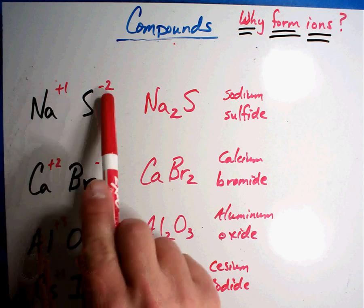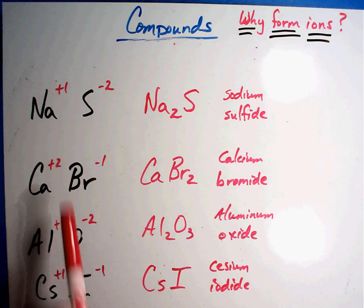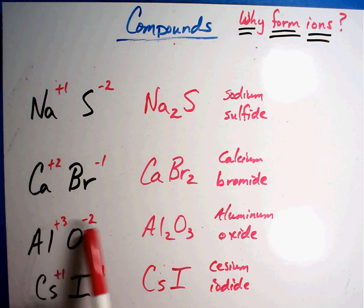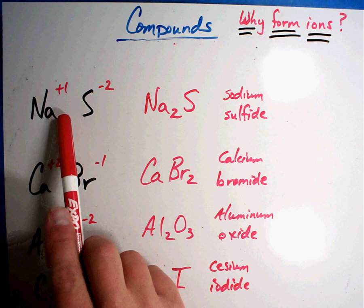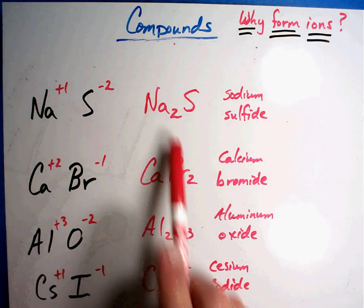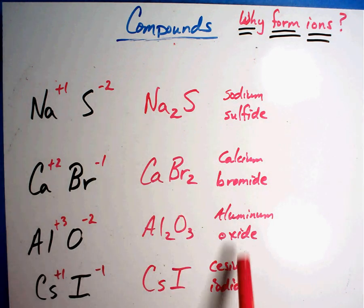We took the charges off the chart and they had to equal zero. If they didn't equal zero, then we had to figure out how many of each would be needed for them to work out zero. This is how we got our formulas and their names.